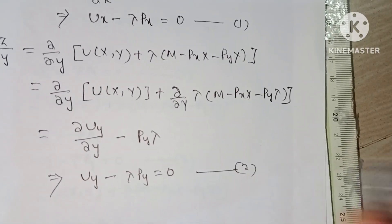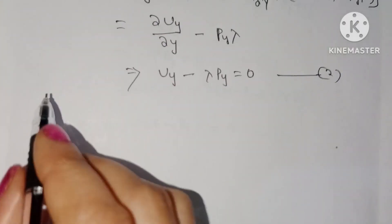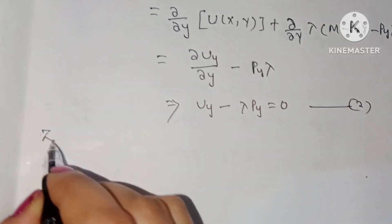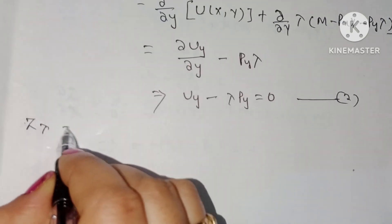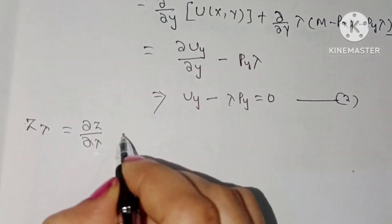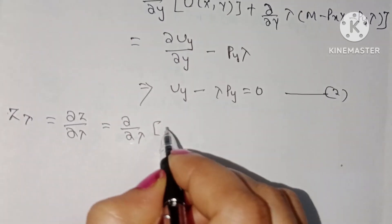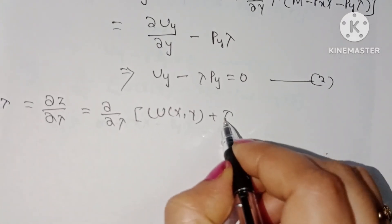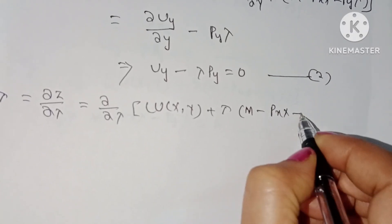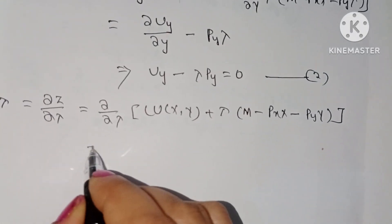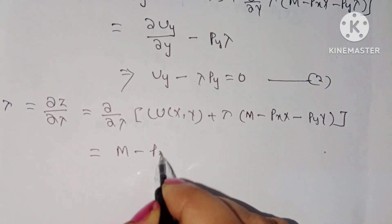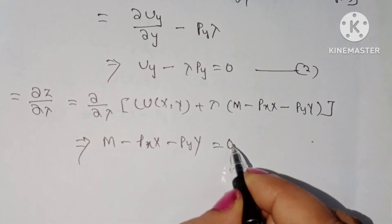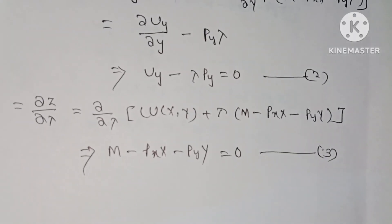Next, we calculate the first-order partial derivative of the composite function with respect to λ. So ∂z/∂λ equals ∂/∂λ of [u(x, y) plus λ(m minus px·x minus py·y)], which gives m minus px·x minus py·y equal to zero. This becomes equation number three.